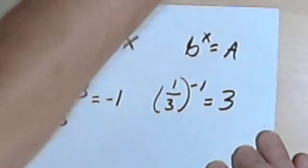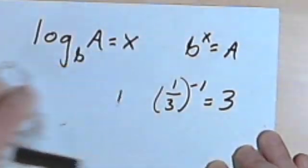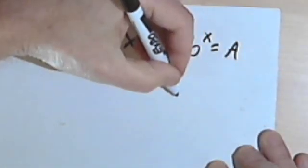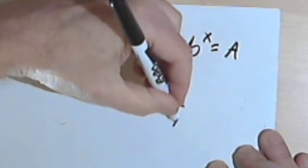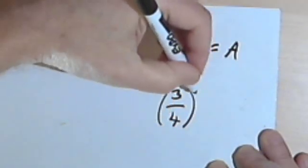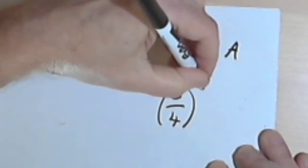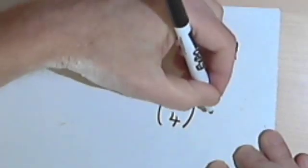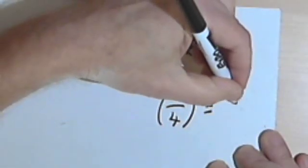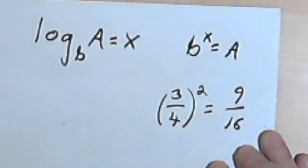And let's go for one more. So what if I start out with the fraction 3 quarters raised to the second power, 3 quarters squared. If I square 3 quarters, I get 9 sixteenths.